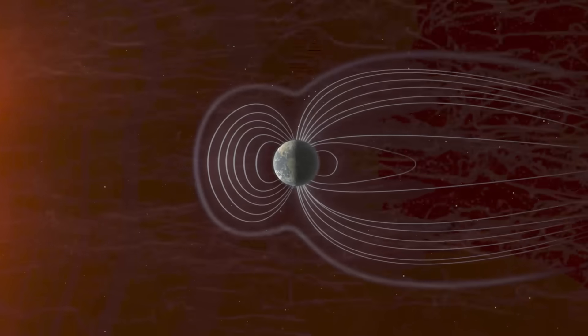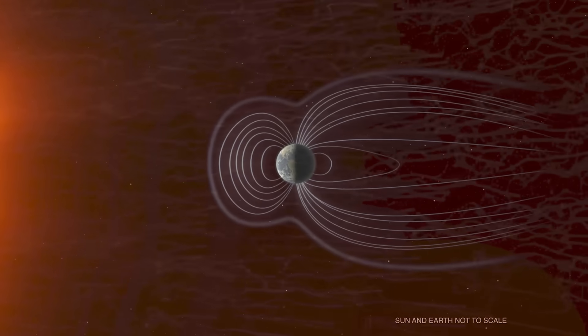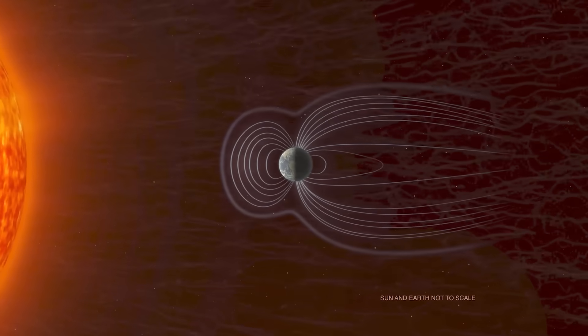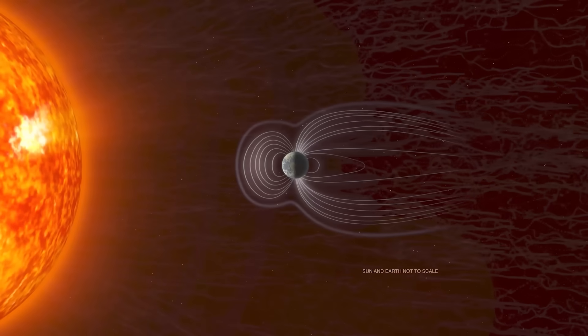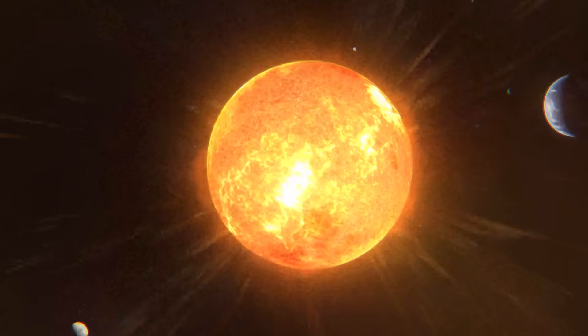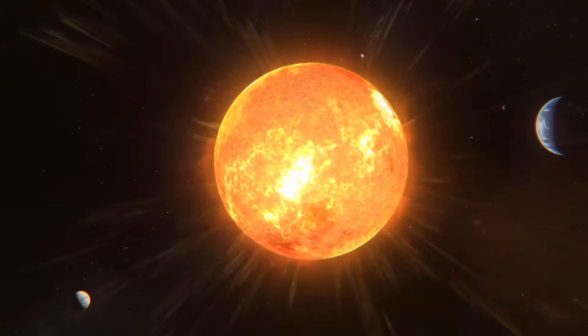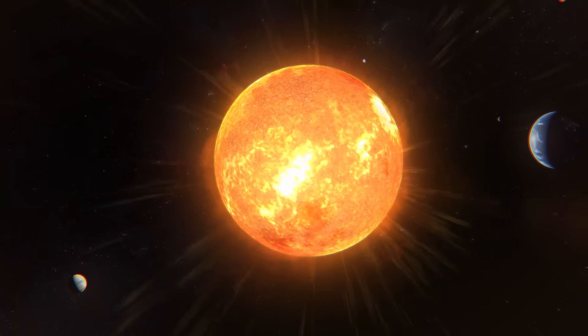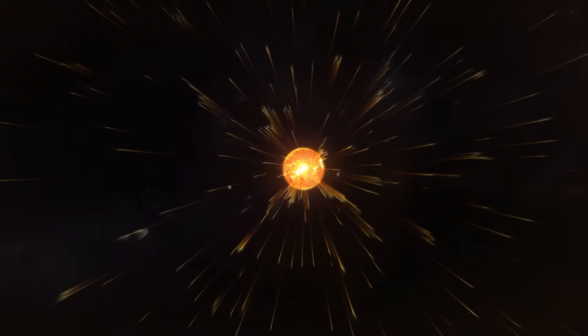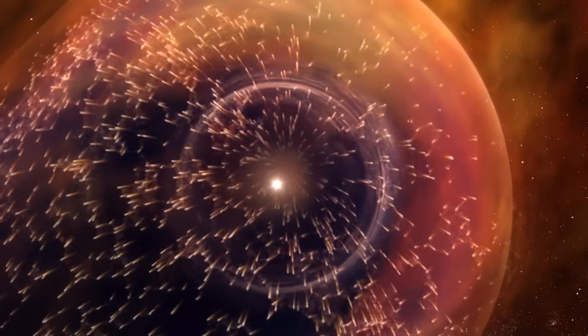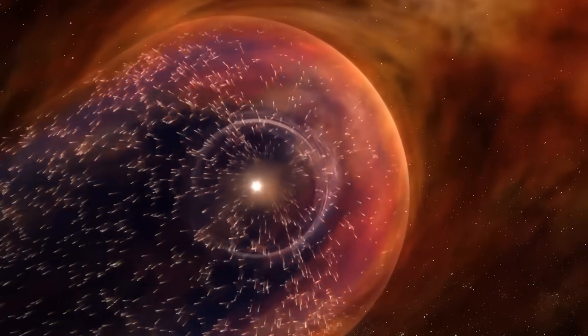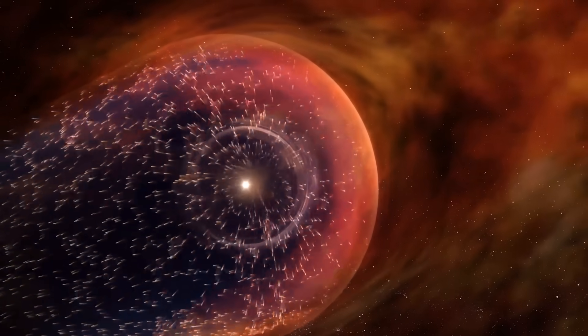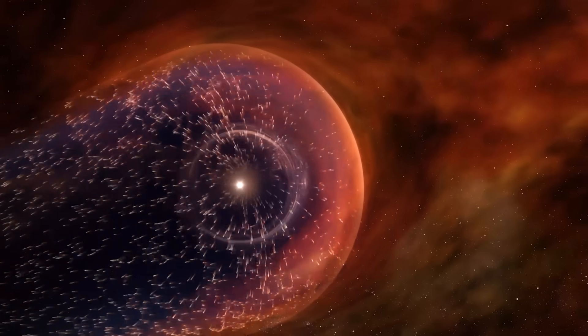The solar wind is a continuous stream of charged particles, mostly electrons and protons, that flows out from the Sun's corona. As these particles race through space, they carry the Sun's magnetic field with them, shaping a giant magnetic bubble called the heliosphere. This bubble acts like an invisible shield, protecting all the planets in our solar system from harmful cosmic radiation.